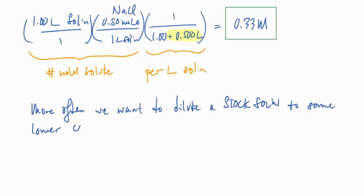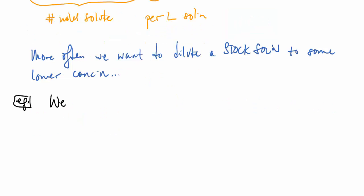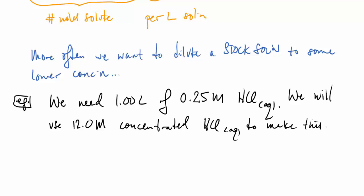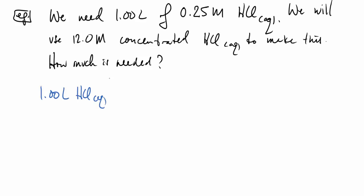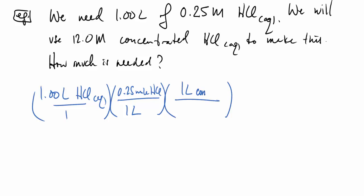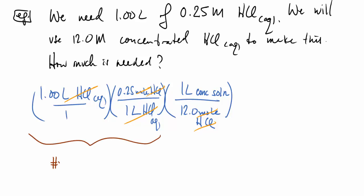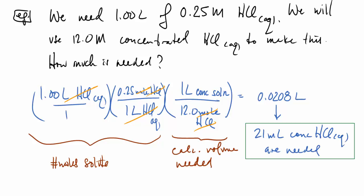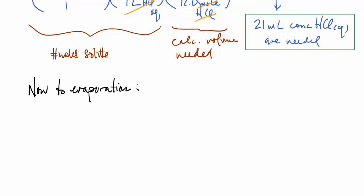More often we want to dilute a stock solution to a lower concentration. For example, we need 1 liter of 0.25 molar hydrochloric acid for lab use, starting from a 12 molar concentrated HCl stock solution. Calculating the number of moles needed and dividing by 12 mol/L, we find that only 21 milliliters of the concentrated hydrochloric acid solution is required.